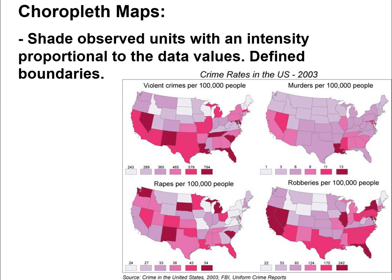The next type is a choropleth map, where we shade observed units with an intensity proportional to the data values — coloring polygons with different colors. There's a progression of color, starting with white or light gray up to dark red. The scale doesn't have to be uniform; for example, 1 to 13, then 22 to 242. The highest number gets the darkest shade and the lowest gets white. So in a 2003 robbery map, we can see which states had 22 robberies versus those with 242.